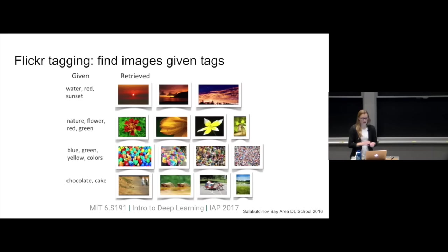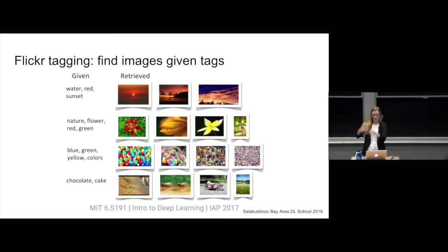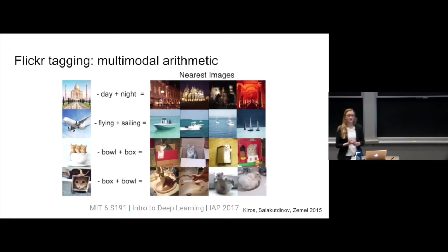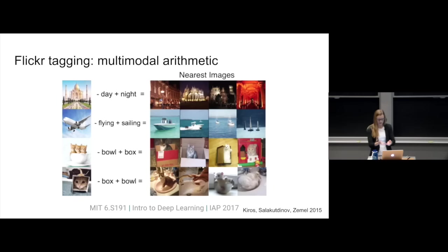We can also go the opposite direction: given some tags from Flickr, can we find images? Once we've built our joint space, it's just a nearest-neighbors problem — take the vectors for 'water,' 'red,' and 'sunset' and find images near those. It does a pretty good job finding images of sunsets over the ocean. Something really cool is multimodal arithmetic: take the image of the Taj Mahal, subtract the vector for 'day,' add the vector for 'night,' and you get pictures of buildings at night that look like that scene.